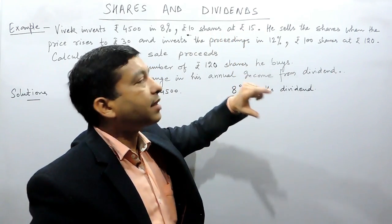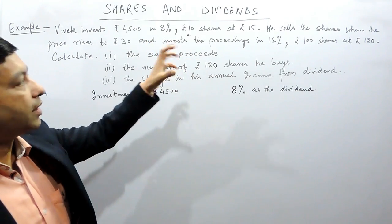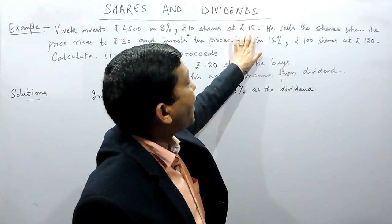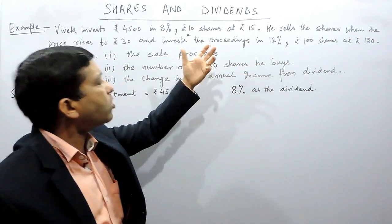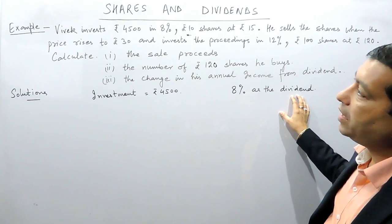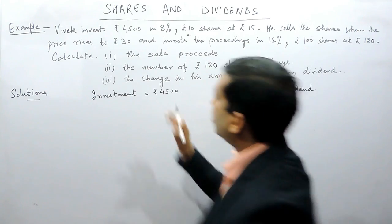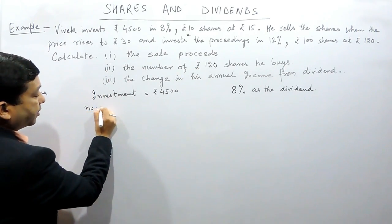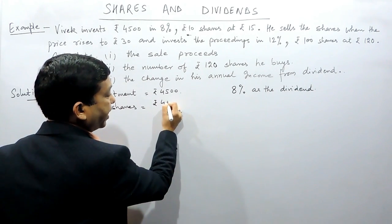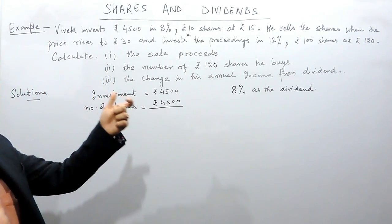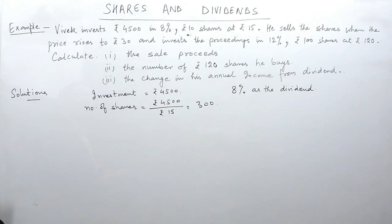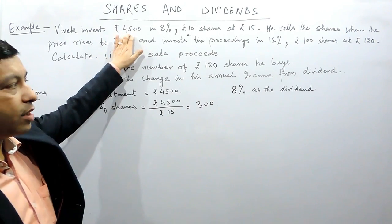At rupees 15, that means he is getting the share at rupees 5 premium — the rupees 10 share he is getting for rupees 15. So this investment of rupees 4500 is at rupees 15 per share. The number of shares Vivek is purchasing is rupees 4500 divided by rupees 15, the price at which the company is giving the share.